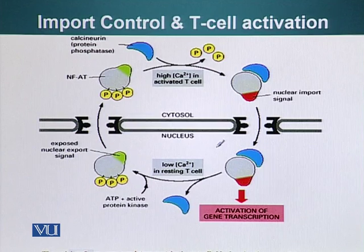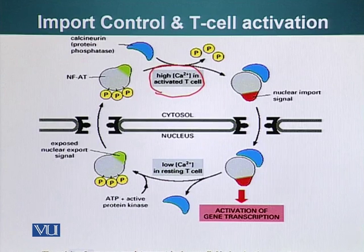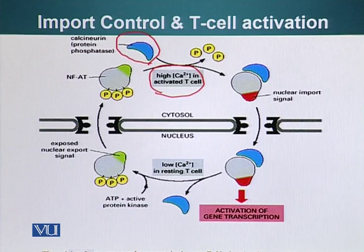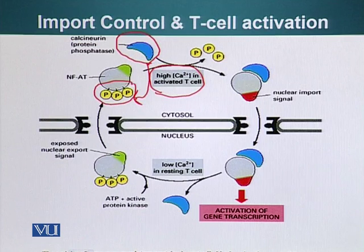Once those signals have been received, it results in an increase of calcium levels in the cell — calcium, as you know, stored in the endoplasmic reticulum. When calcium levels go up, a protein called calcineurin is activated; it is a phosphatase. It works on the NFAT and removes the phosphate groups from NFAT, so the nuclear import signal is exposed.